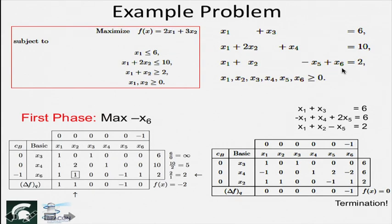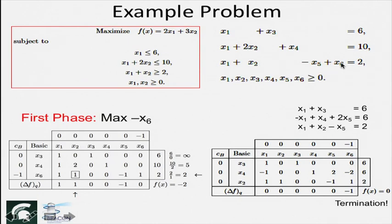It is the same problem but with an added greater-than-or-equal-to constraint. The point (0,0) is no longer feasible. We add slack variable x3 for the first constraint, slack variable x4 for the second, subtract slack variable x5 for the greater-than constraint, and add artificial variable x6, making it equal to 2. So x6 is the only artificial variable here. If there were 5 greater-than constraints, there would be 5 artificial variables. In the first phase, we minimize x6 — or equivalently maximize −x6 — since LP does maximization.